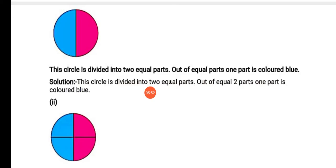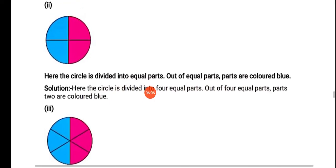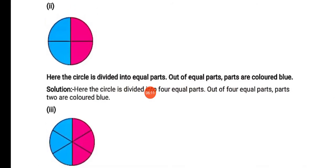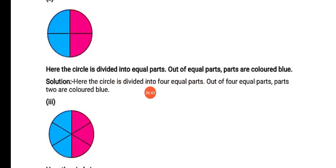Now there is one more circle in number 2. Here the circle is divided into dash equal parts, out of equal parts, dash parts are colored blue — fill in the blanks. You have to write that blank and the solution in your notebook. Our answer is: here the circle is divided into 4 equal parts — yahaan pe yoh jo circle hai, iske total 4 equal parts hai. Out of 4 equal parts, 2 parts are colored blue.